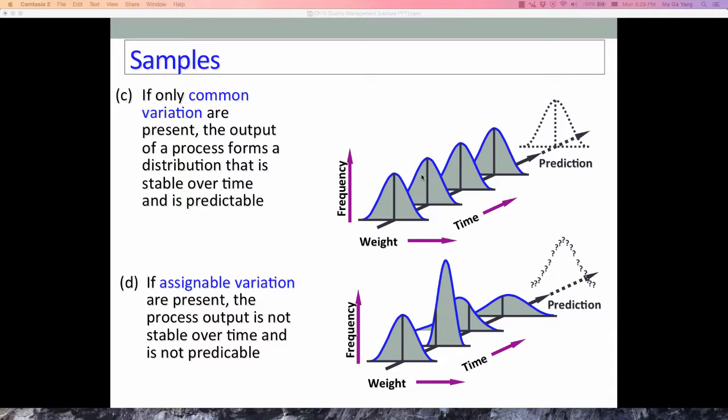Stable processes simply means a predictable process. But when assignable variation is present, the process output is not stable over time, so we are not able to predict the pattern of the process. It needs to be corrected and get back to the normal process.